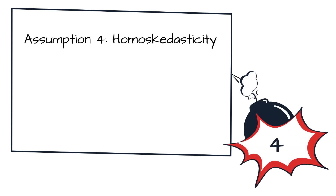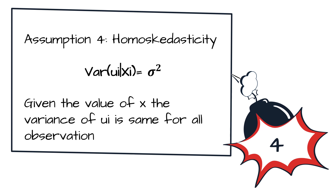The fourth assumption states homoscedasticity. Given the value of x, the variance of ui is the same for all observations — basically, the variance of all error terms is one and the same. That is, Var(ui | xi) = σ².